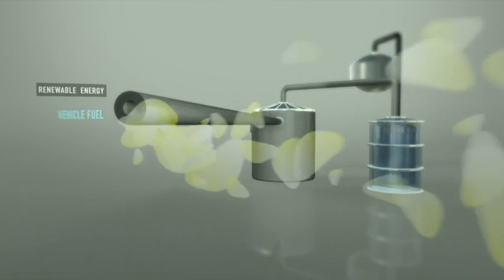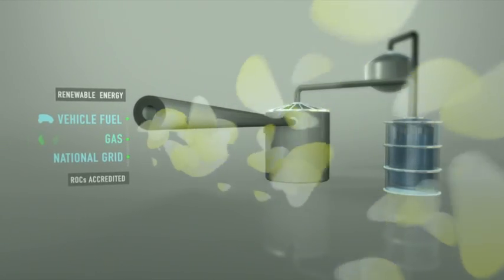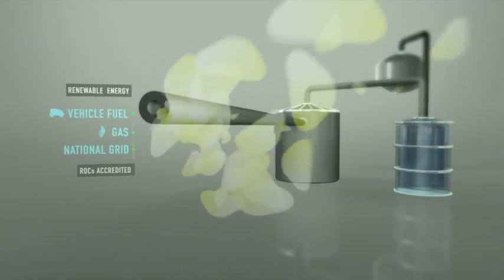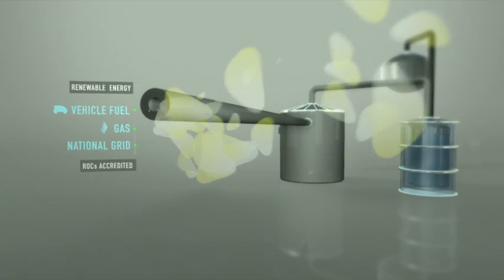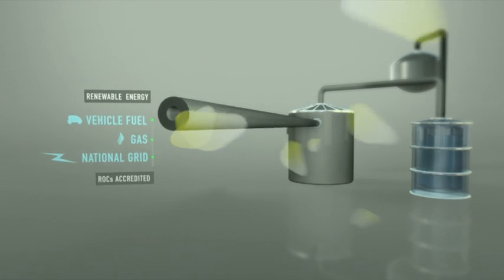The biogas gets used in a variety of different ways. It can be upgraded to vehicle fuel or injected directly back into the gas grid. But typically, Shanks combusts the biogas to generate renewable energy which is sold to the national grid. This energy attracts renewable obligation certificates, known as ROCs.